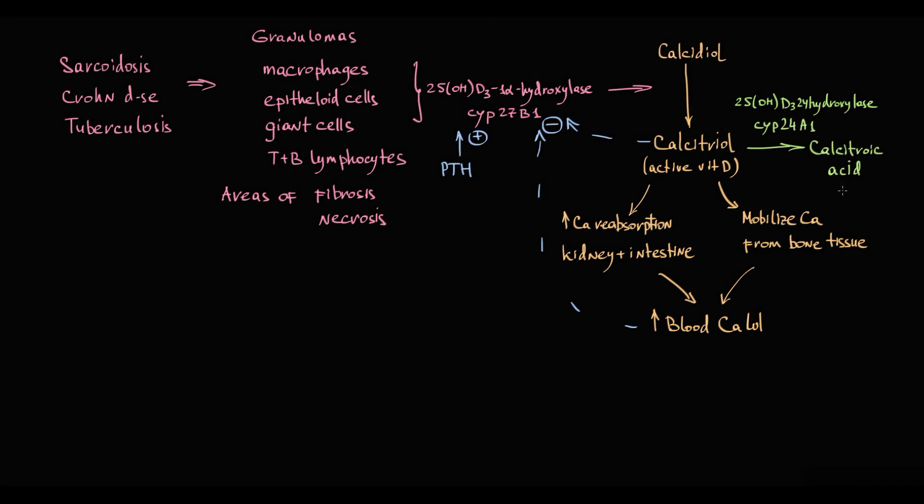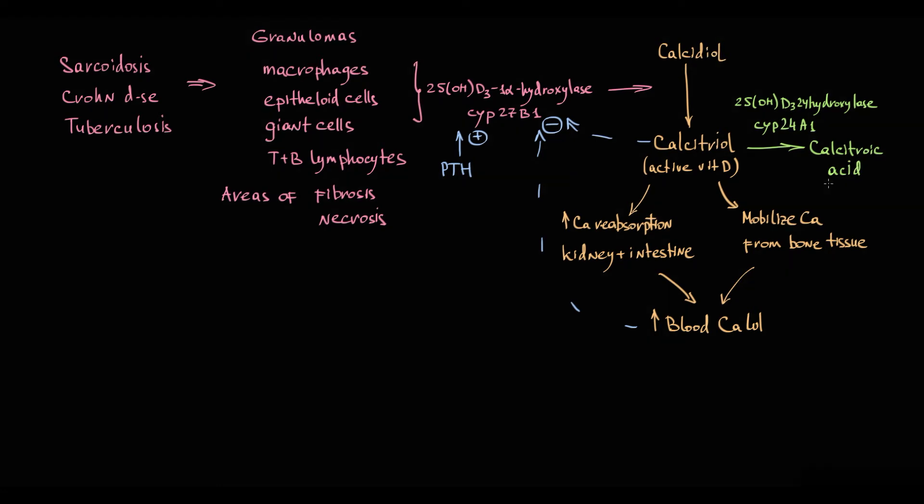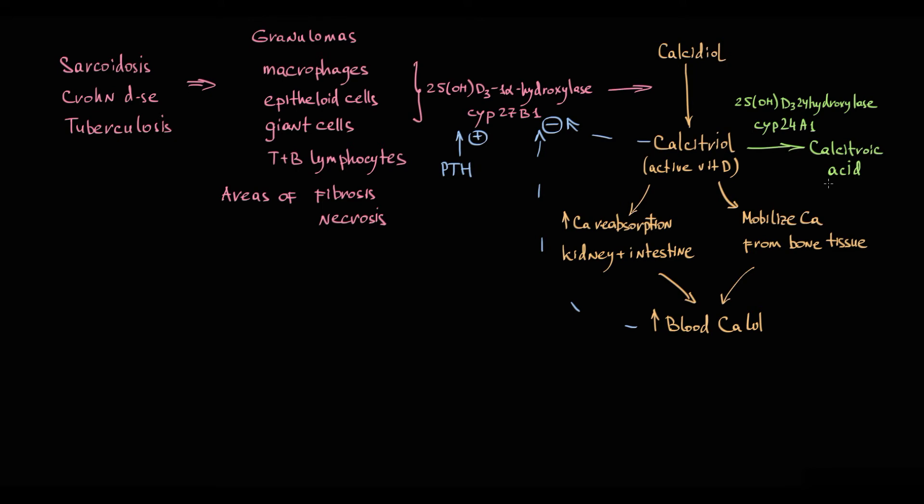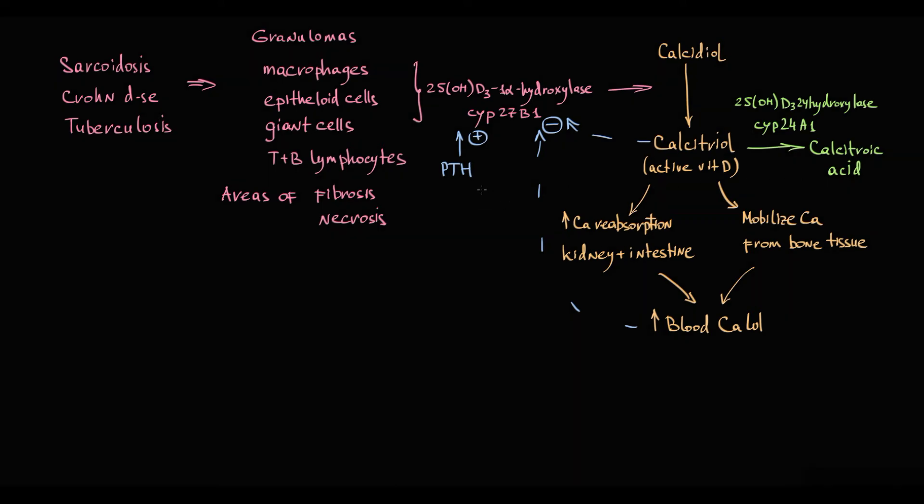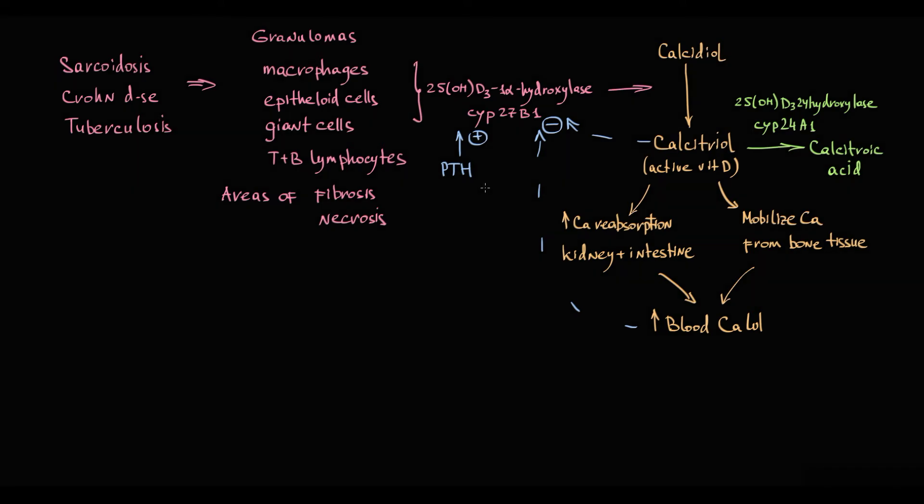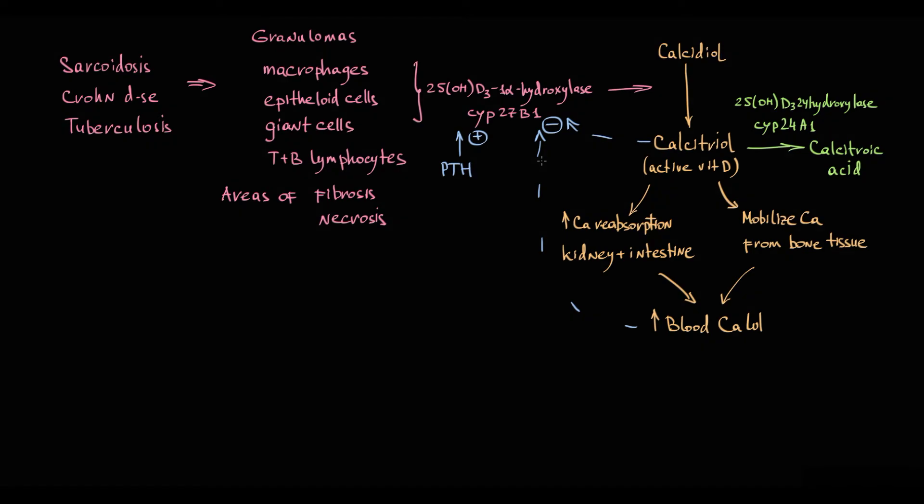But in contrast to kidneys, the activity of 25-hydroxyvitamin D3-1-alpha-hydroxylase enzyme in macrophages is not regulated by parathyroid hormone, and this enzyme is not inhibited by high blood calcium levels or even by high calcitriol levels. So in the case of macrophages, there is no normal negative feedback mechanism.